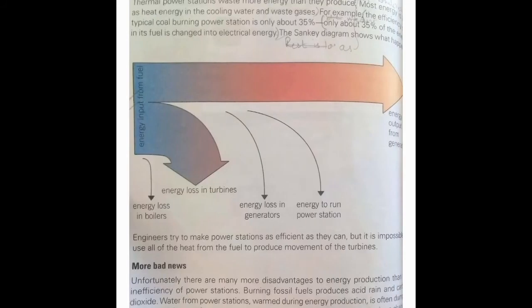Now the bad news — the first subtopic is the efficiency problem. Whenever you convert one form of energy into another, not all of the energy is converted. Some is lost as waste heat. For example, when converting electrical energy into light energy, heat energy is released as a waste product.